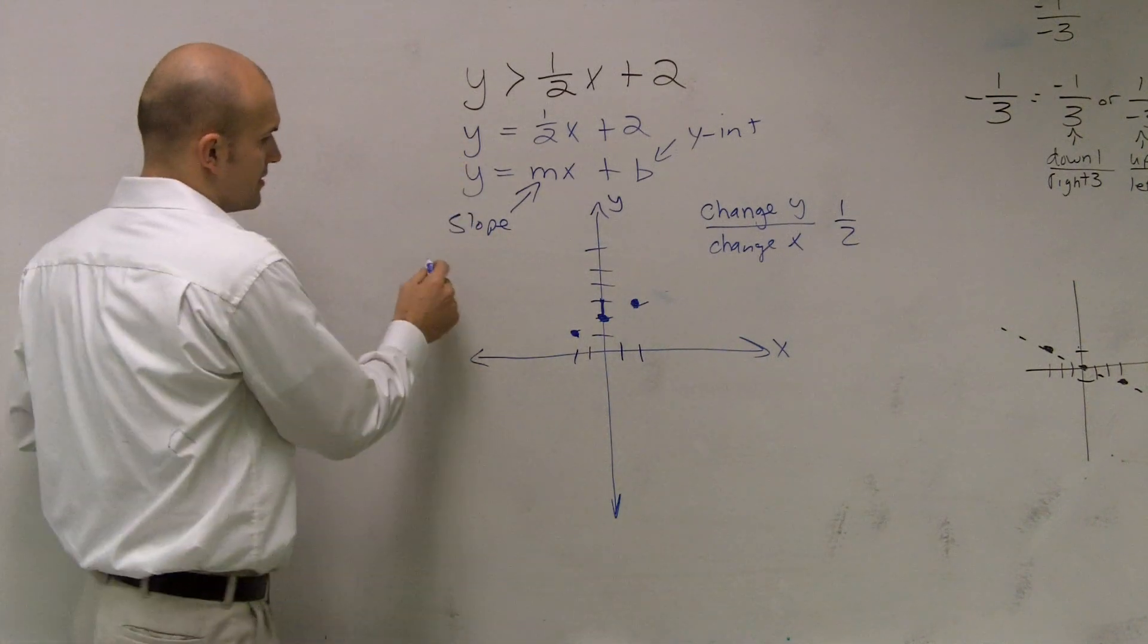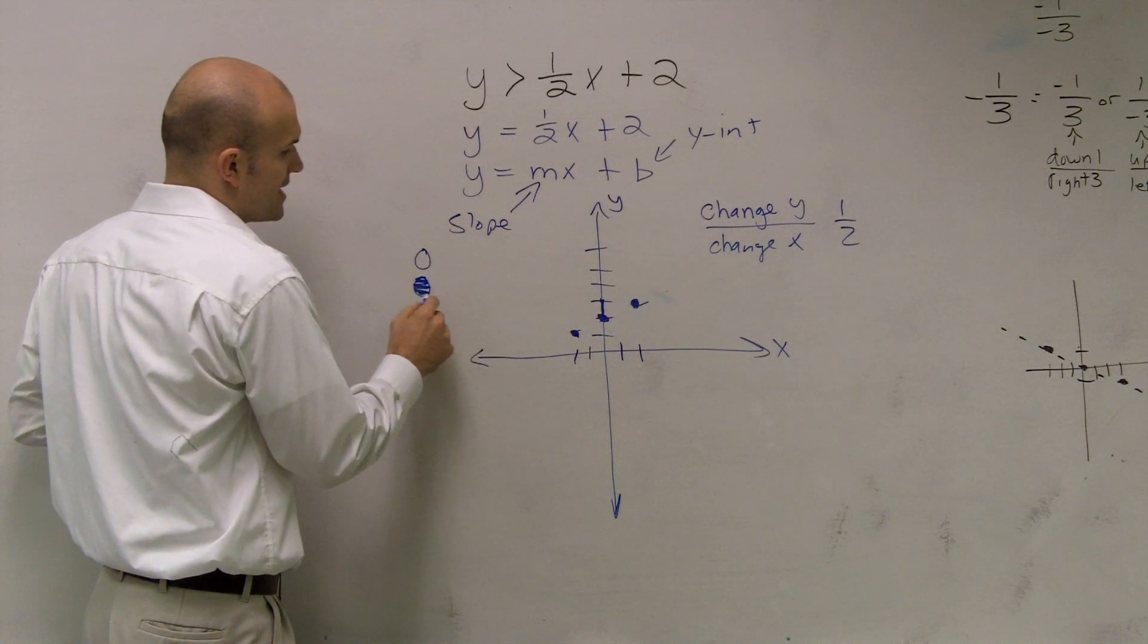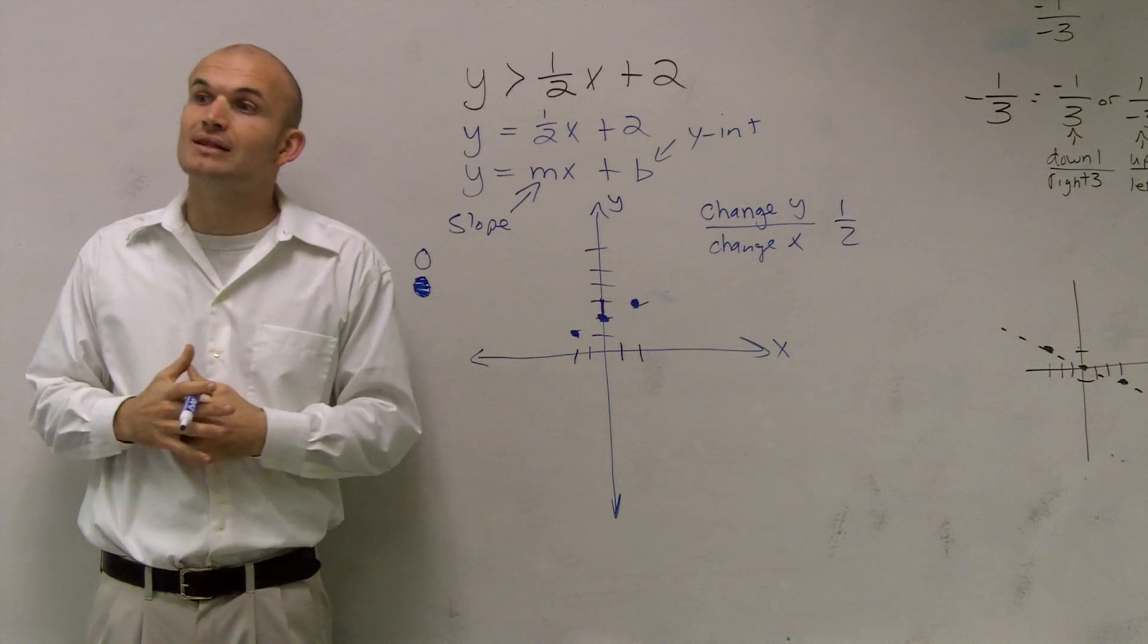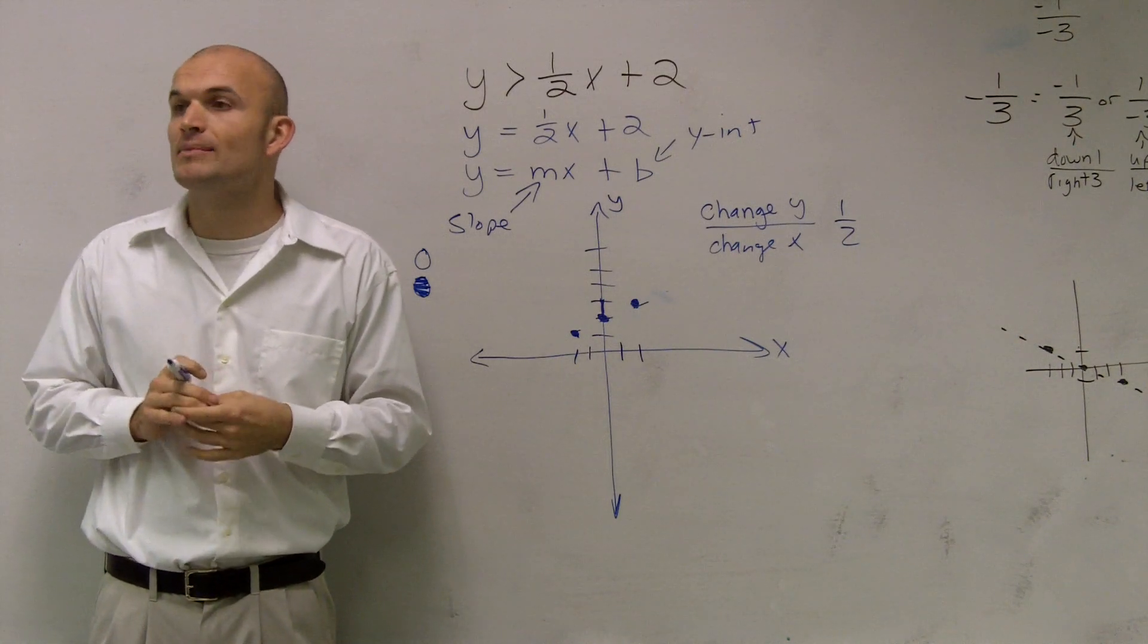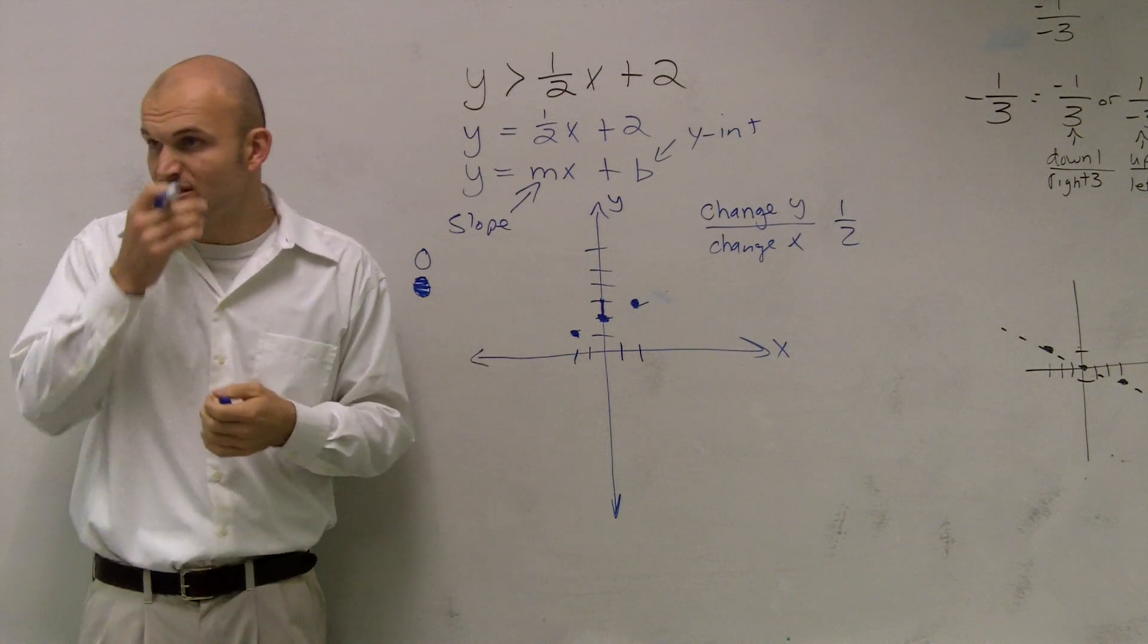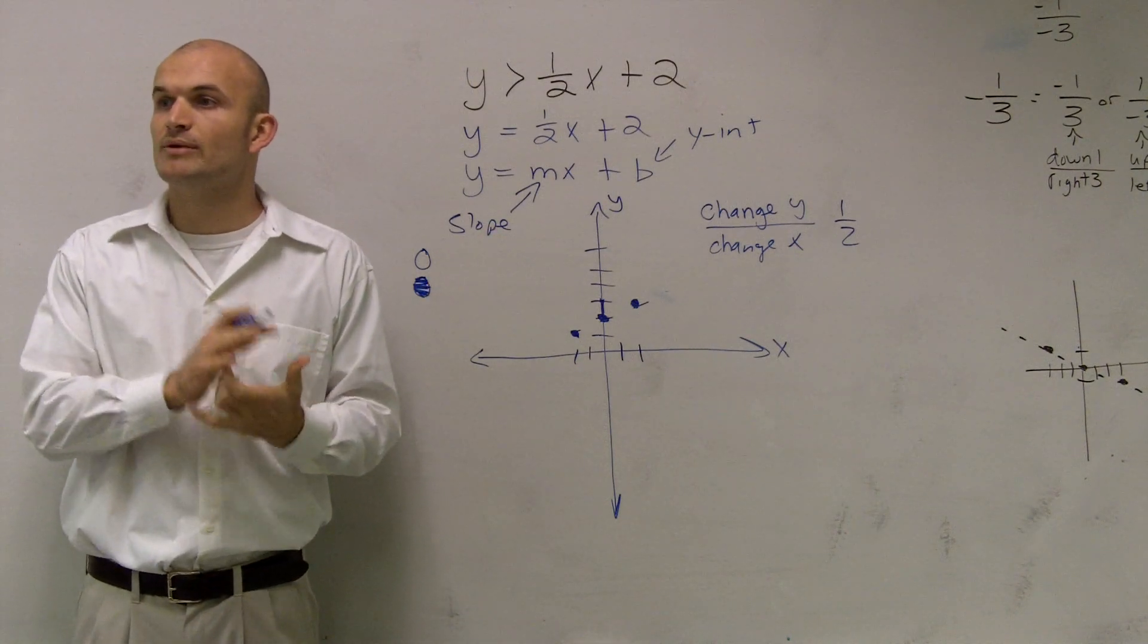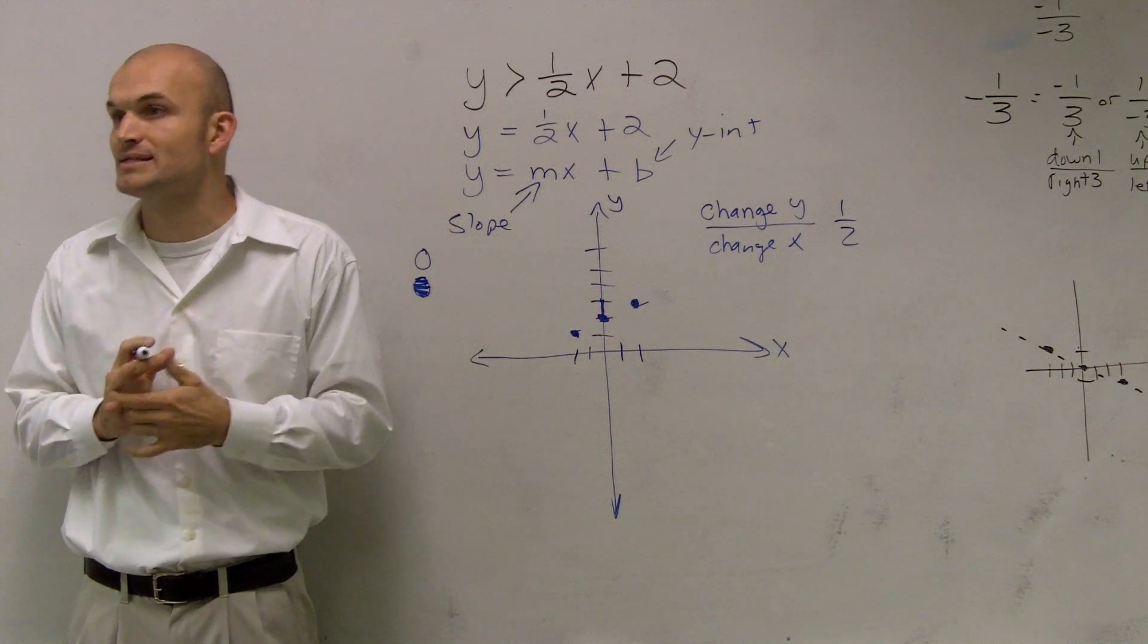Now remember, on an inequality, on a number line, we had either an open or a closed dot. We don't deal with dots right now. Now we're dealing with lines. So the important thing that you want to make sure that you have done is you want to make sure that when you're looking at either a dash or a solid line, that you make sure you determine when is it going to be dashed or when is it going to be solid.